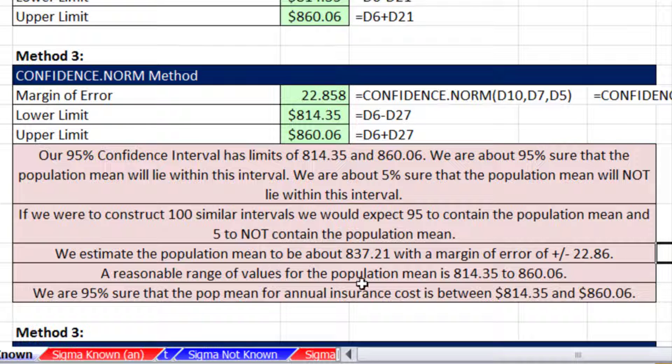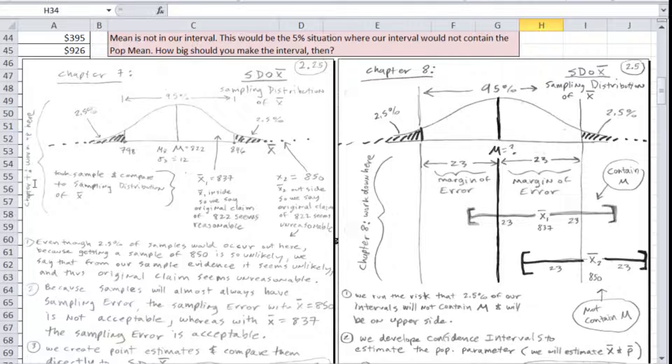Still another way to say this. We estimate the population mean to be about 837 with a margin of error of approximately 23 plus or minus. Another way to say this: a reasonable range of values for the population mean is 814 to 860. Still another way to describe what we did: We are 95% sure that the population mean for annual insurance cost is between 814 and 860. I kind of like that last one the best.